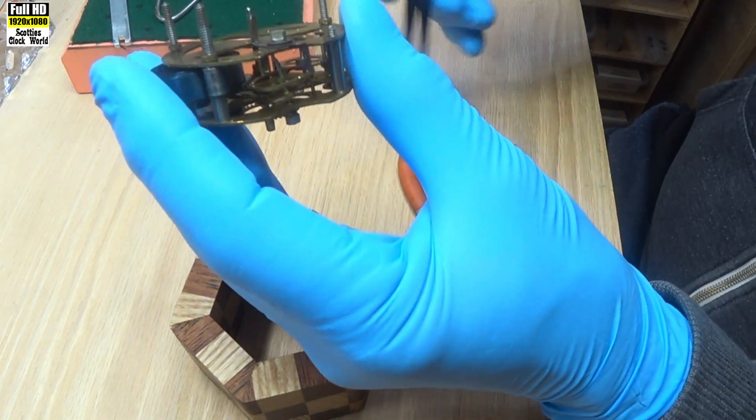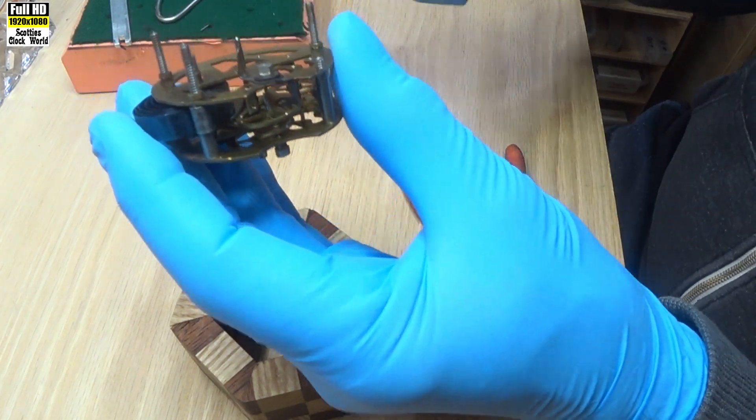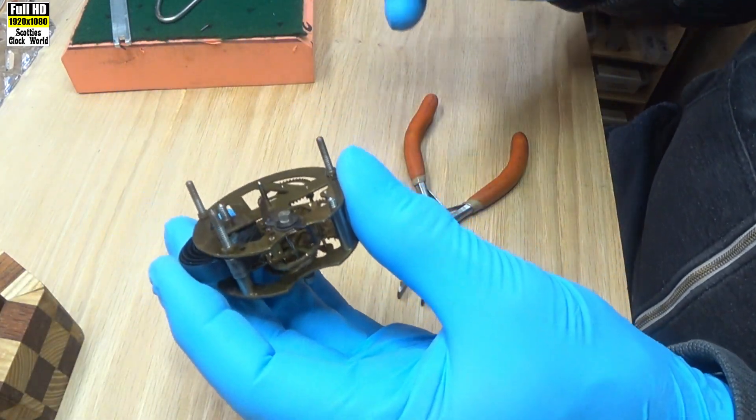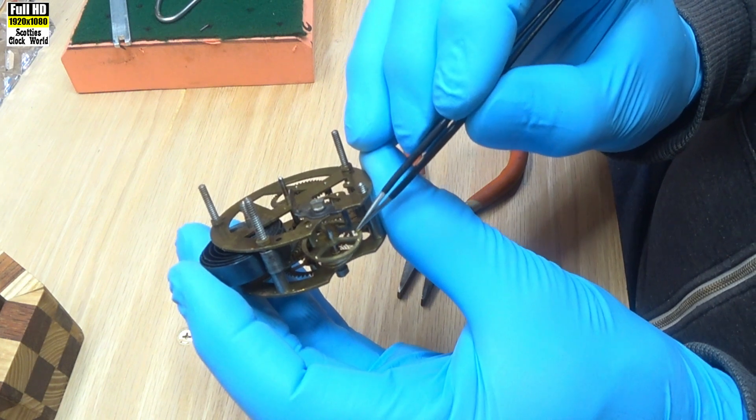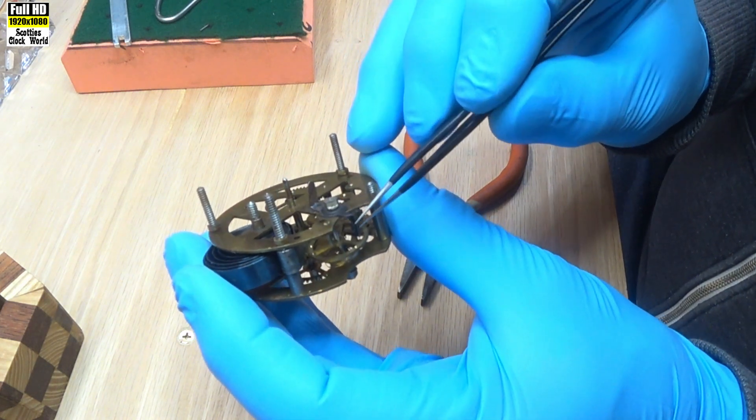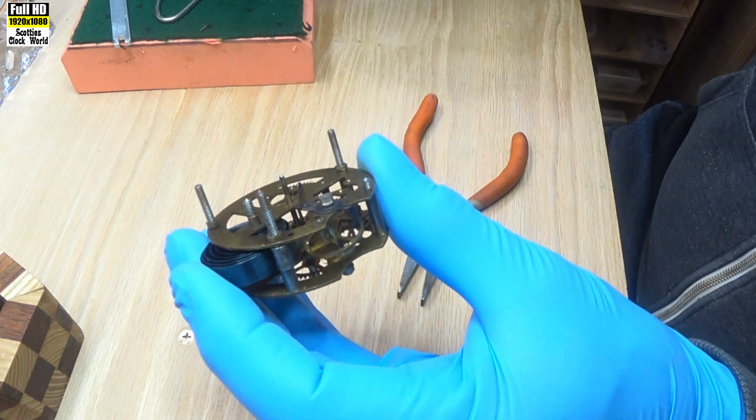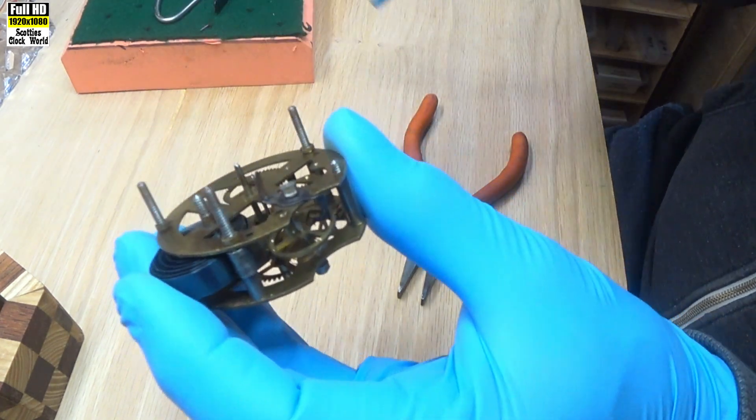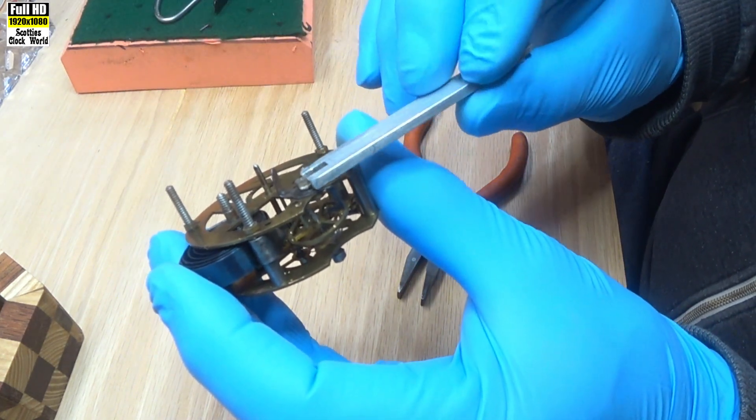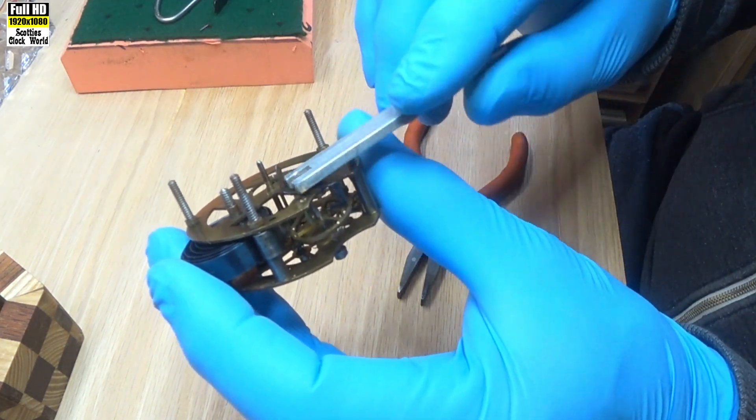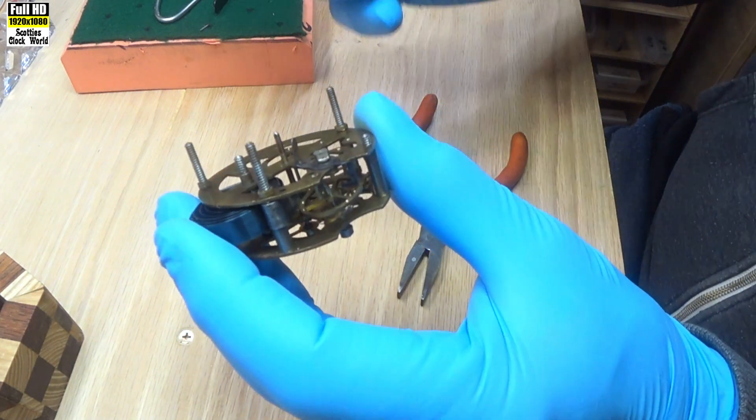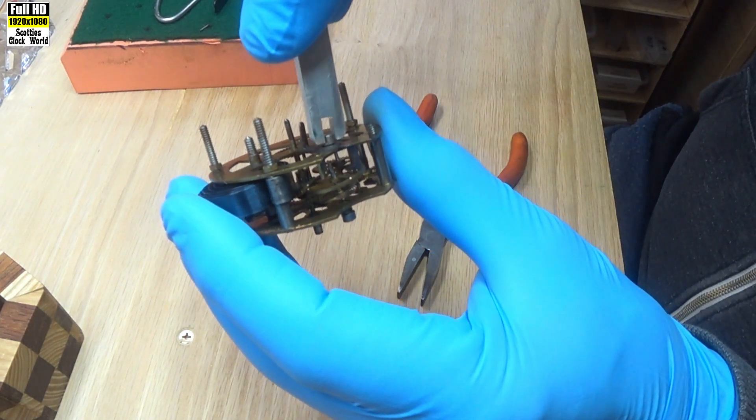What we have to do now is align the balance staff and tighten it down into there. Be very, very careful with this because the slightest mishap and you've destroyed it.